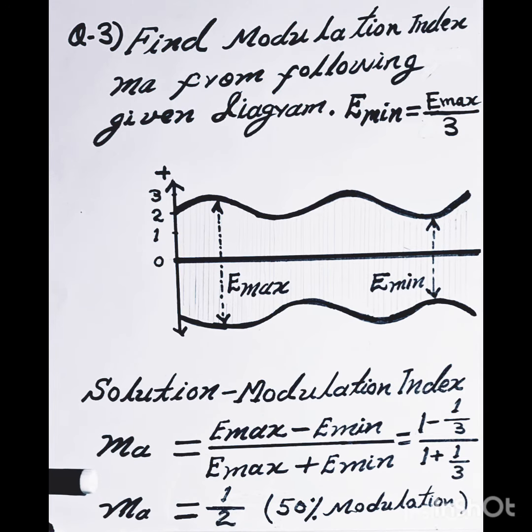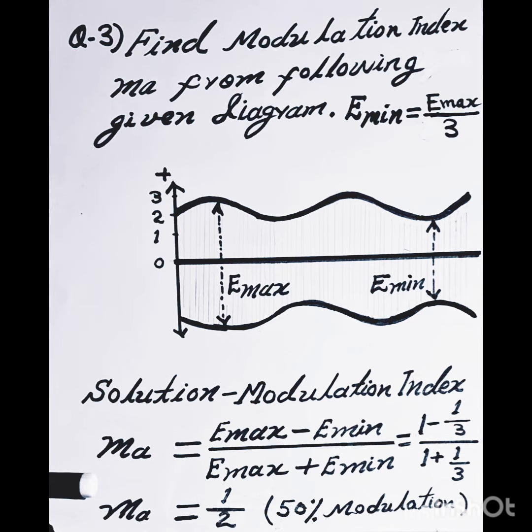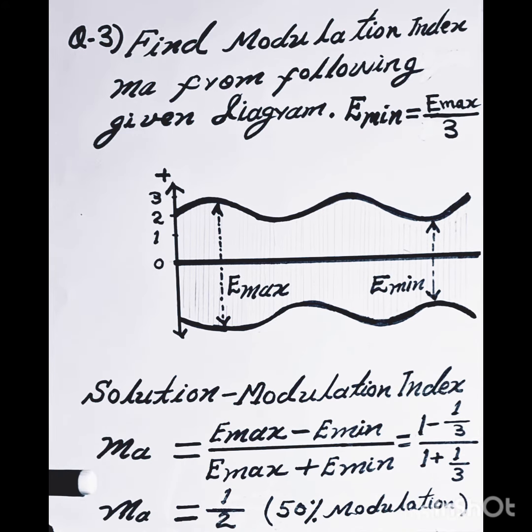This equals 1 upon 2. So MA equals 1/2, which corresponds to 50% modulation.